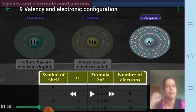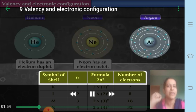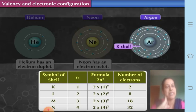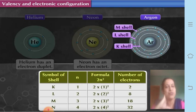Now let us look at argon. The atomic number of argon is 18, so it has two electrons in the K shell, eight in the L shell, and eight again in the M shell.